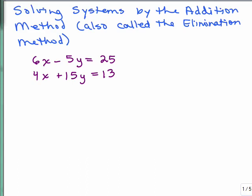The addition method is another way to solve systems of equations. This method is especially useful if you have equations in the form AX plus BY equals C, as in the case I have here: 6X minus 5Y equals 25 and 4X plus 15Y equals 13. It would be difficult to use the substitution method here because it wouldn't be easy to solve for X or Y in either equation - you would get fractions.